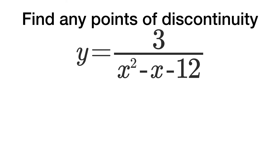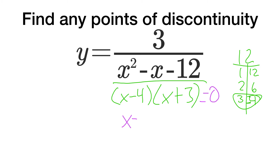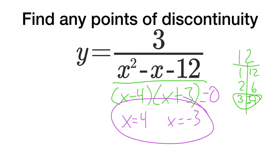Let's find some points of discontinuity by factoring. Our factors of 12 are 1 and 12, 2 and 6, and 3 and 4. The ones with a difference of 1 but negative give us negative 4 and positive 3, so x minus 4 times x plus 3. That means our zeros are x equals 4 and x equals negative 3, and those are our points of discontinuity.